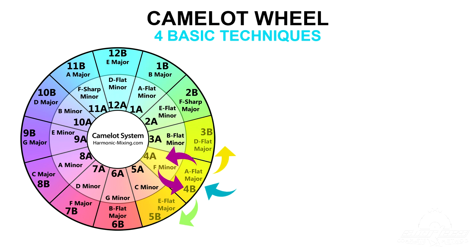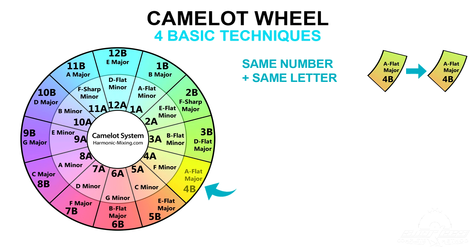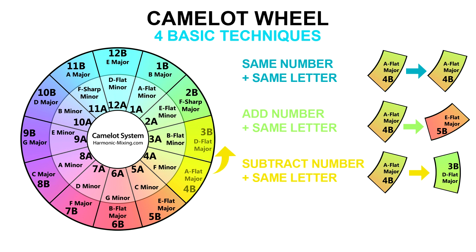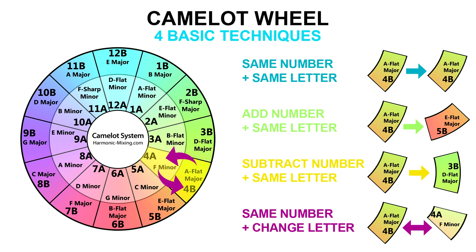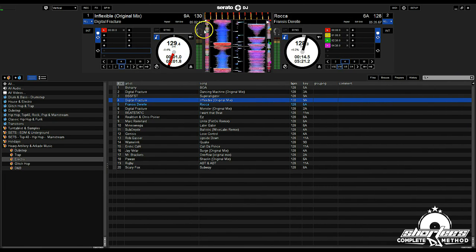Just to recap before we go any further: anytime you're mixing, you have four basic tried-and-true compatible key options to choose from. You can either stay in the same number on the wheel, you can add or subtract a number, or you can stay in the same number and just switch from A to B or from B to A. Now I'm going to show you a few other options that aren't as reliable as the first four techniques but usually work fairly well. It really just depends on what notes your songs actually use in their respective key and when they use them.